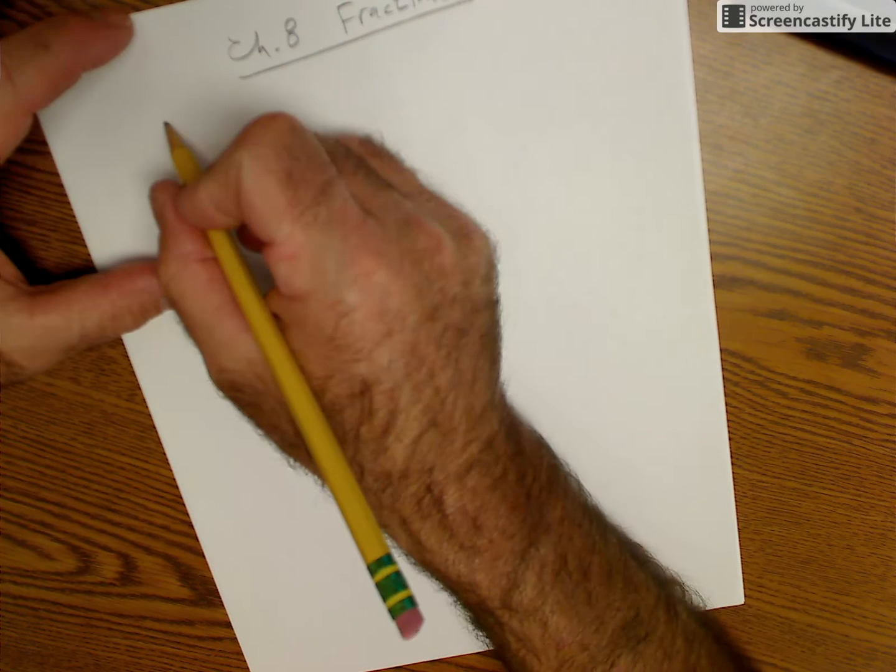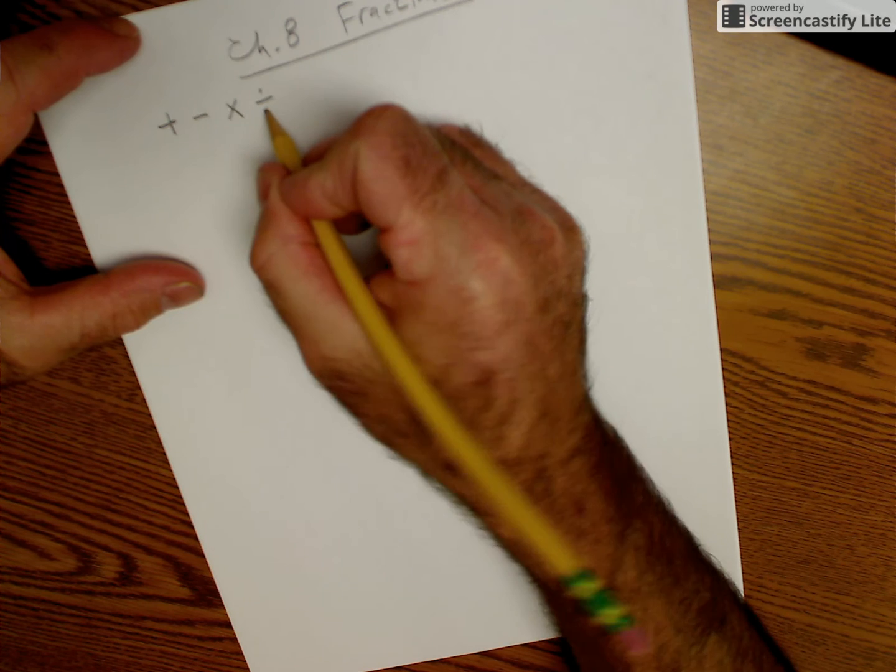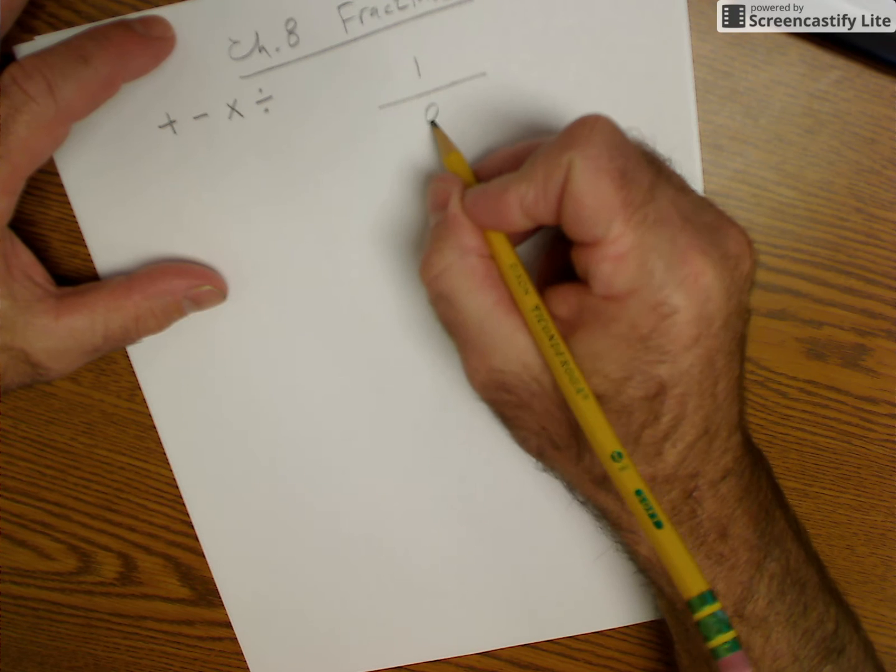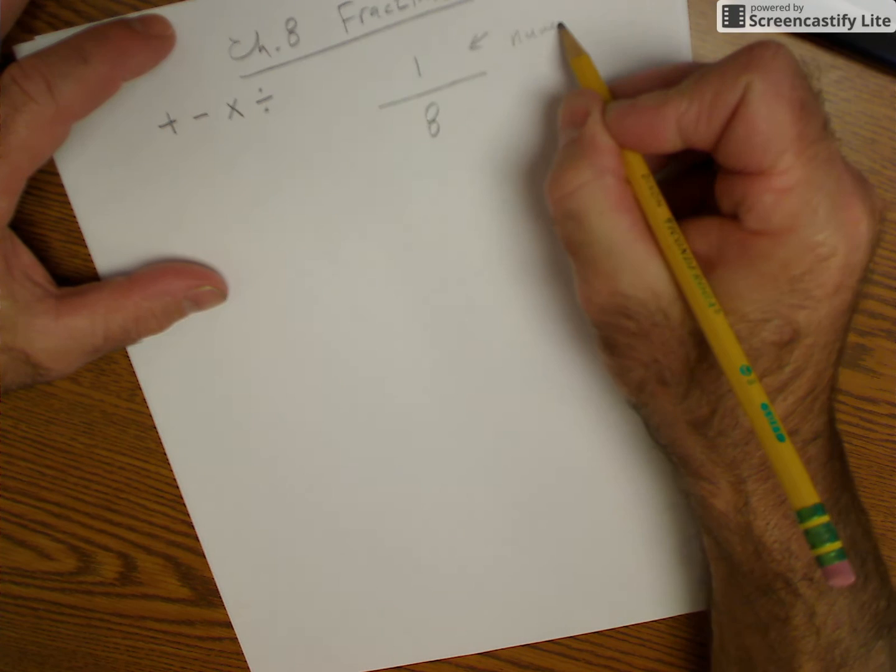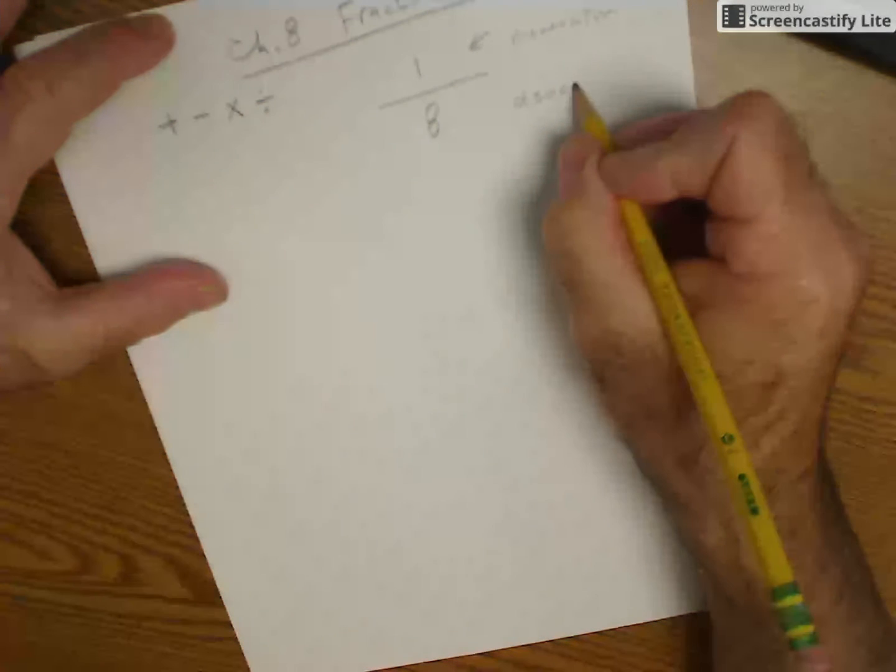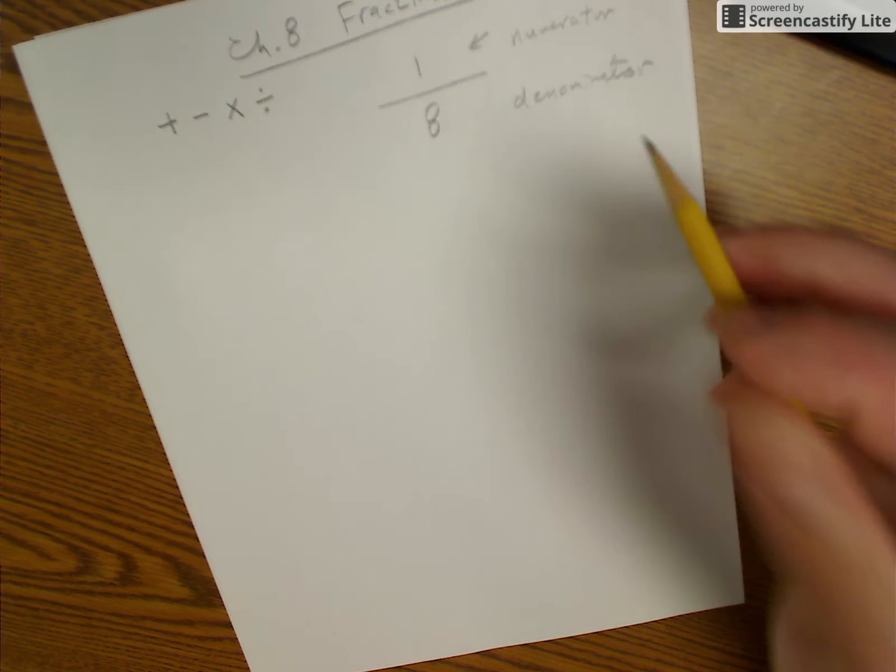Four operations: add, subtract, multiply, and divide. A fraction is anytime you have one number over another number. The top number is called your numerator, the bottom number your denominator. So the top is a numerator, the bottom is a denominator.